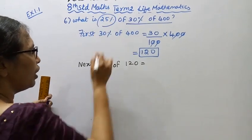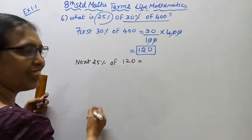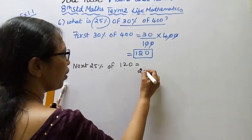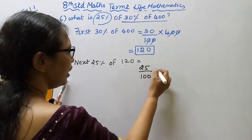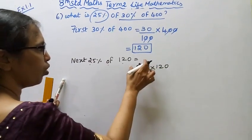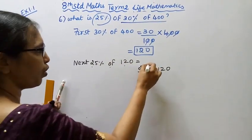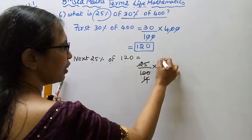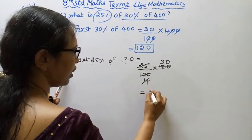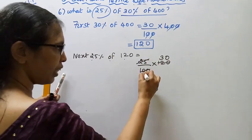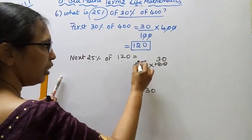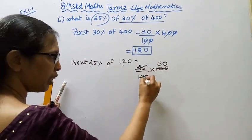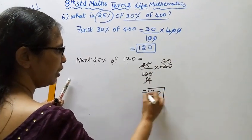Now we find 25% of 120. That is 25 by 100 into 120. 100 divided by 25 is 4, so we get 30. The answer is 30.